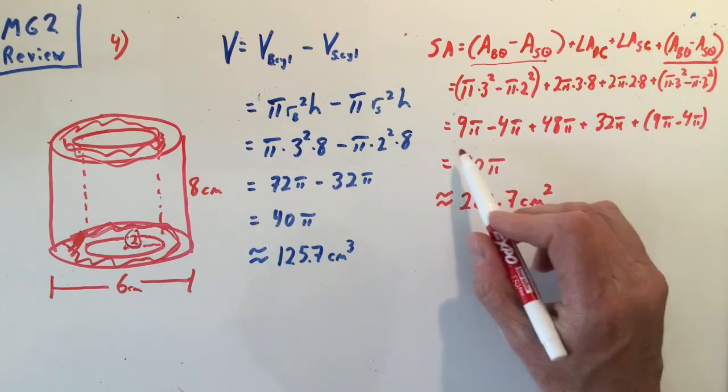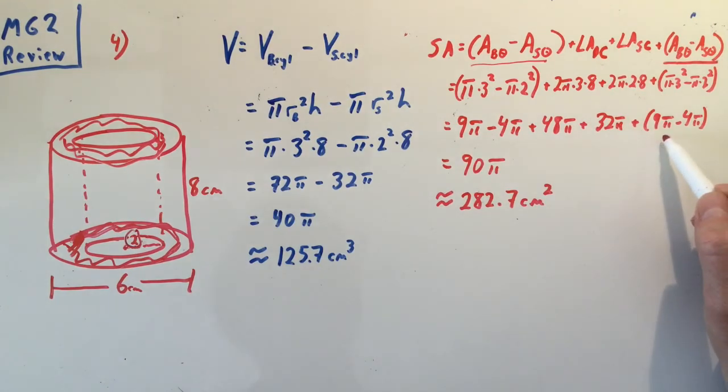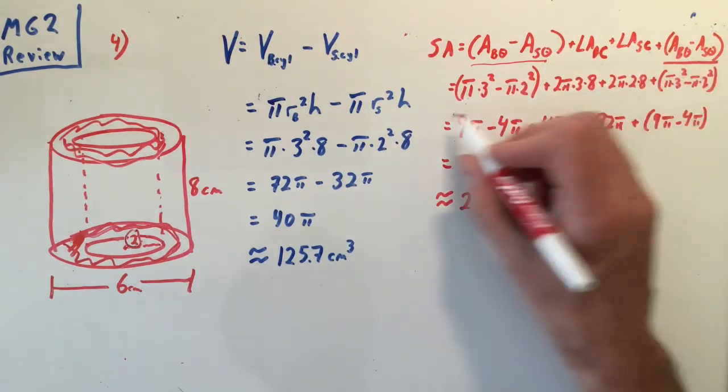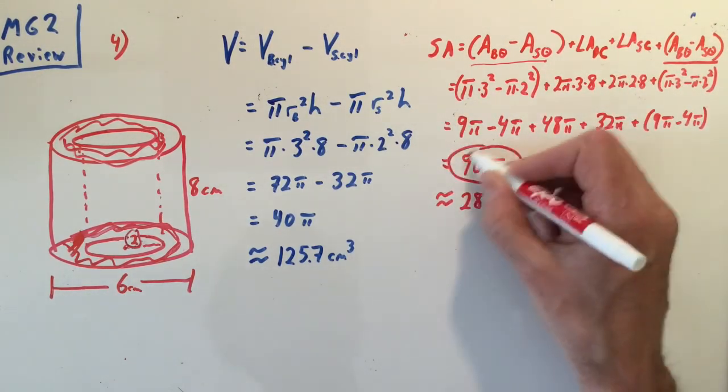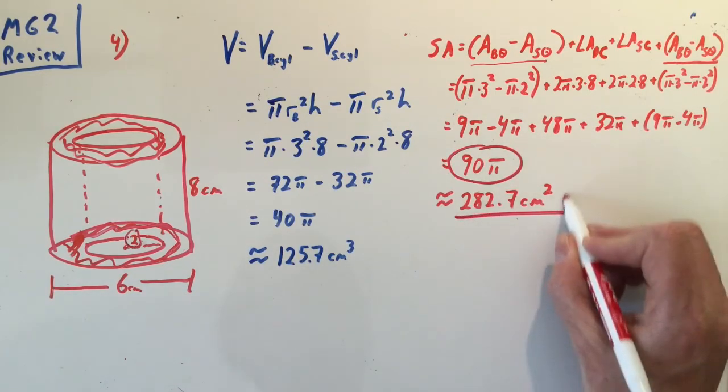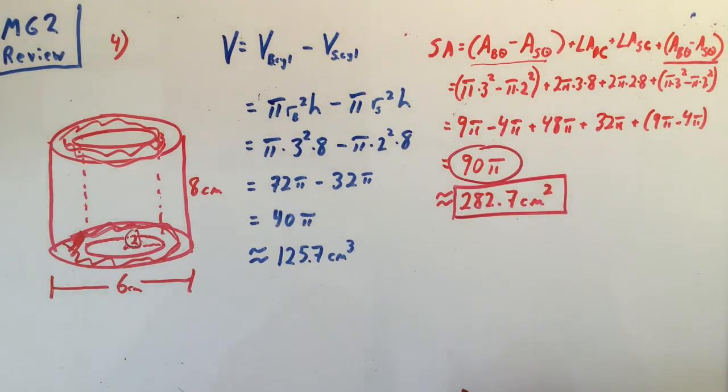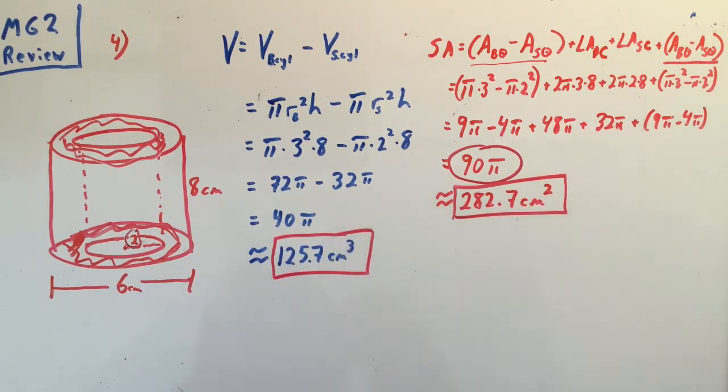Simplify that and I end up with 9π - 4π + 48π + 32π + 9π - 4π, which is 90π. And again, you could even at this stage just go ahead and plug all that into your calculator, or do some simplifying to find the exact value and then go to your calculator. The approximate value then is 282.7 square centimeters, volume 125.7 cubic centimeters.